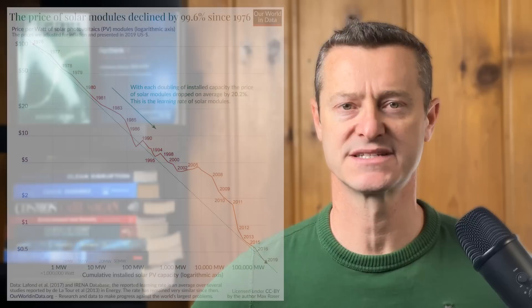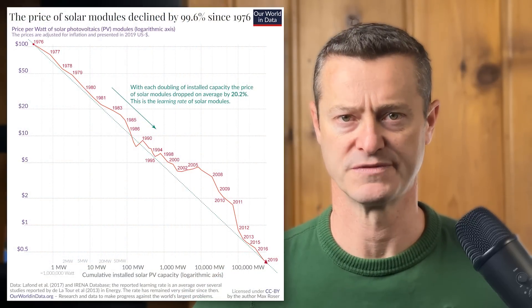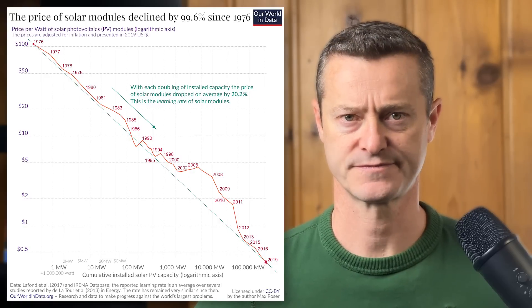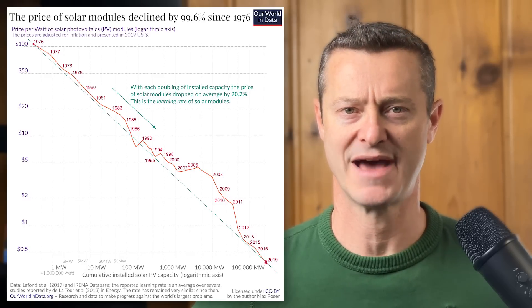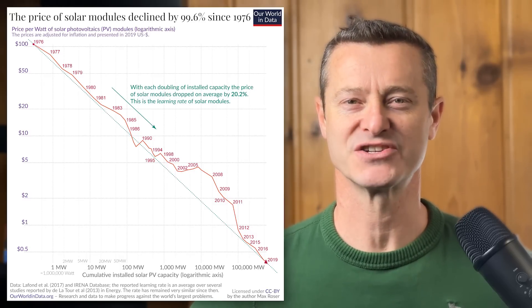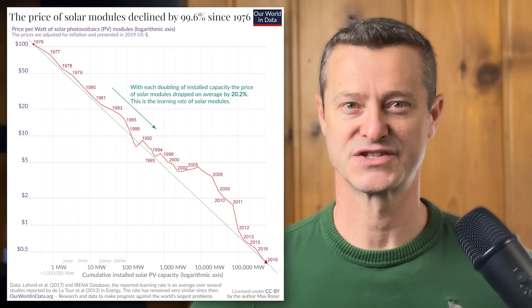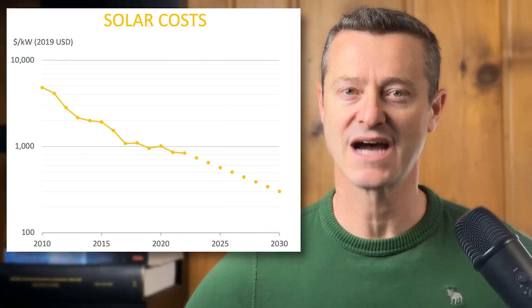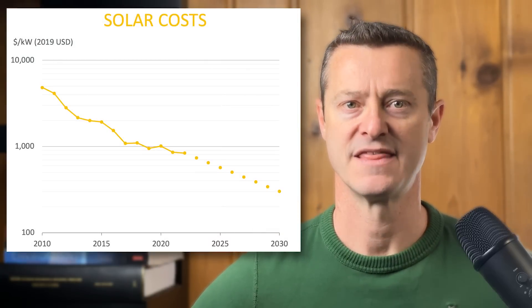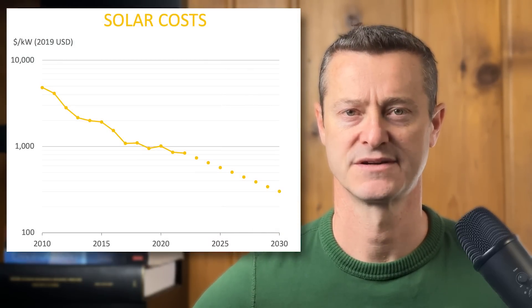Our team at RethinkX has documented over 100 disruptions throughout history, and they all follow the same pattern. A new technology emerges, and as cumulative production grows, its costs improve following an exponential decay function. This is sometimes called Wright's Law, after Theodore Wright described the pattern in 1936. And because production itself tends to grow exponentially at first, those costs also decline consistently over time — meaning cost improvements are predictable.